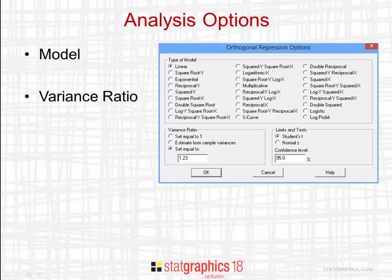The second option specifies the variance ratio eta. It may be set equal to 1, it may be estimated from the sample variances, or it may be set equal to some known value.